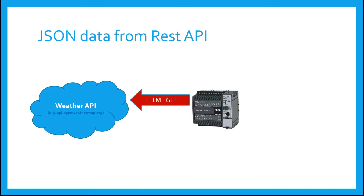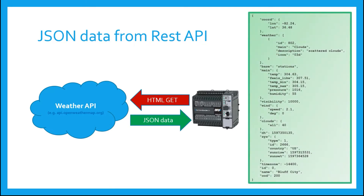The Brics PLC can use an HTML instruction and execute what's called an HTML GET, and query this weather API on the Internet. The weather API will respond with data that is in JSON data format. And as you can see in this data, you can gather all kinds of information about the weather if you know what you're looking for. So once again, you don't really have to know all the ins and outs of a REST API to use them, but you will have to know how to utilize JSON data. So let's get to that.